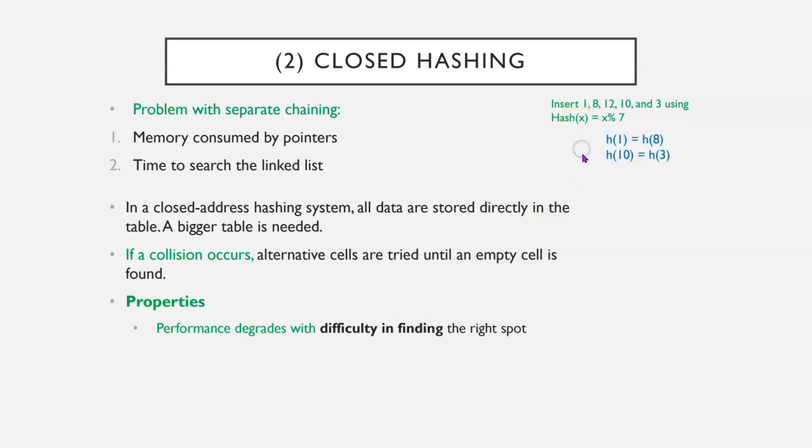So here, we'll use this approach. H of 1 equals 8. H of 10 equals 3. H of 12 would be 5, so we're okay. But H of 1 and 8 collide. So, what we've got to do is find the next available spot, which would be H of 2. Similarly, H of 10 would hash to here, and H of 3 would also hash to here, so we're going to have to find the next spot.